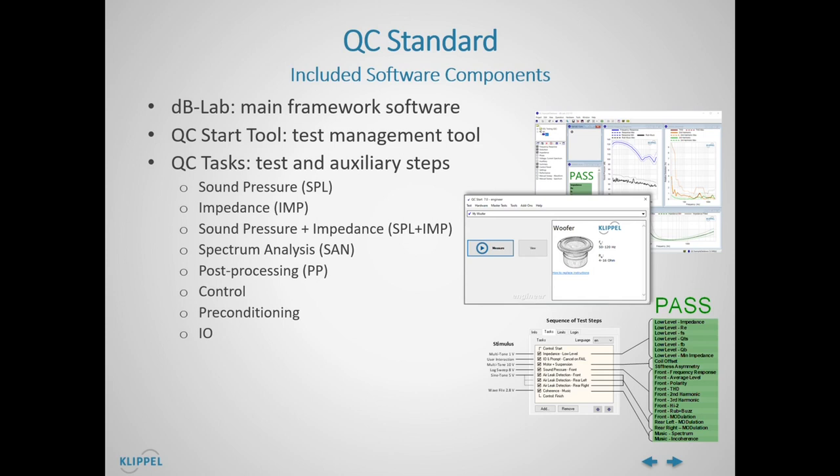The following tasks are included in QC Standard. Sound Pressure (SPL): the main acoustic measurement step based on a sine sweep stimulus. Impedance and Thiele-Small parameter measurement. Sound Pressure and Impedance (SPL+IMP): combined measurement of acoustical response and impedance parameters. Spectrum Analysis (SAN): spectrum and frequency response measurement using noise or custom signals provided via WAV file.